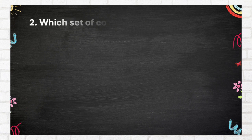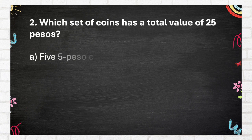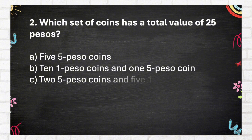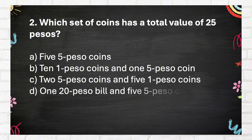Question number 2. Which set of coins has a total value of 25 Pesos? Again, which set of coins has a total value of 25 Pesos? A. 5 five-Peso coins. B. 10 one-Peso coins and 1 five-Peso coin. C. 2 five-Peso coins and 5 one-Peso coins. D. 1 twenty-Peso bill and 5 five-Peso coins.